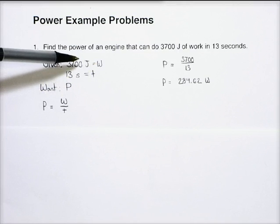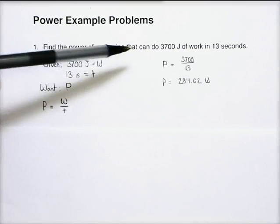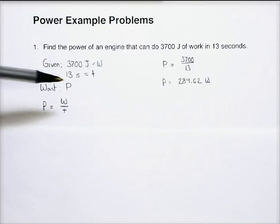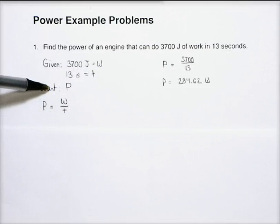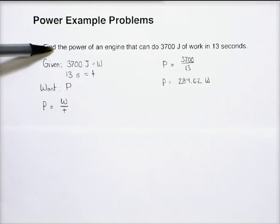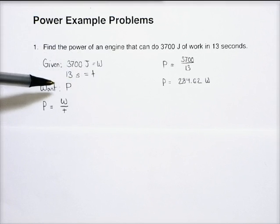So in this case, 3,700 joules, that's how much work I have done. And 13 seconds coming from right there, that's how much time has passed. So I say that's equal to T to show that that is a time. And what I want to find is the power. So find the power. That part right there tells me I'm looking for the power.